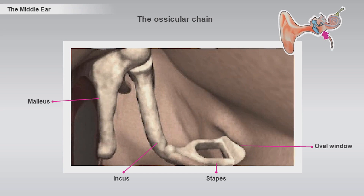The middle ear bones can be influenced by two small muscles. The most important one is the stapedius muscle, which will contract to protect the ear from loud sounds.